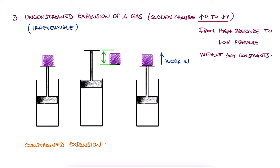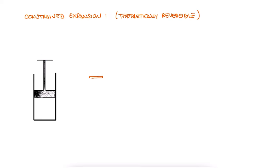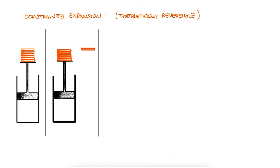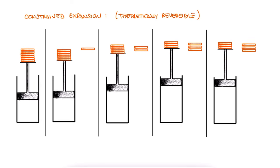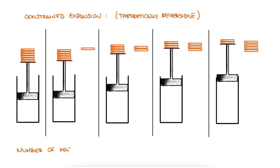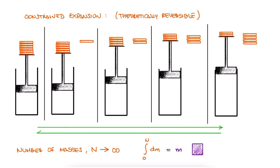Constrained expansion on the other hand is theoretically reversible. With the same example of a piston cylinder system, we can have smaller masses on top of the piston. If we take one by one, the piston will rise little by little. When the number of masses approaches infinity, with infinitesimal masses that add up to the same original mass from the irreversible example, we could have the position of each mass be exactly where the piston would rise up to. In theory, and of course with an infinite number of masses, we could just place each mass back on top of the piston, making this process completely reversible.